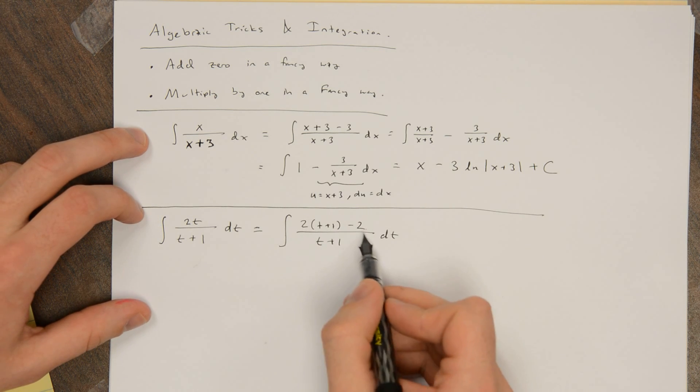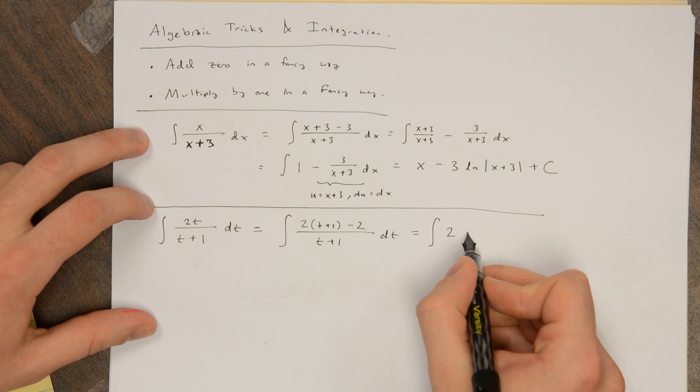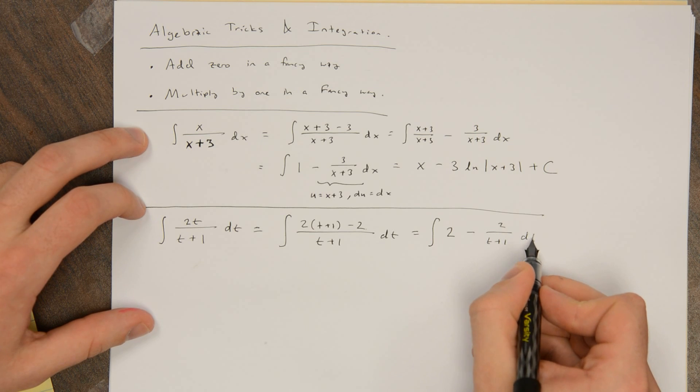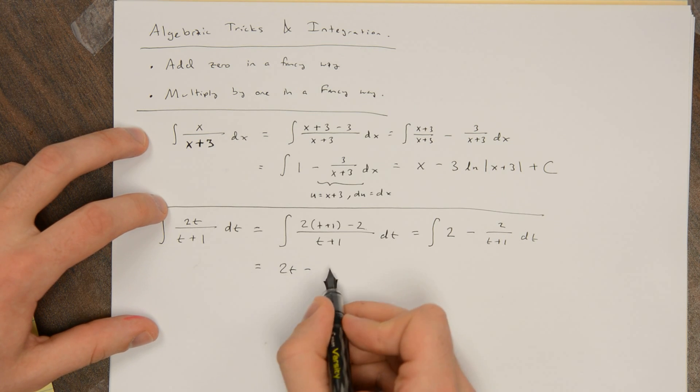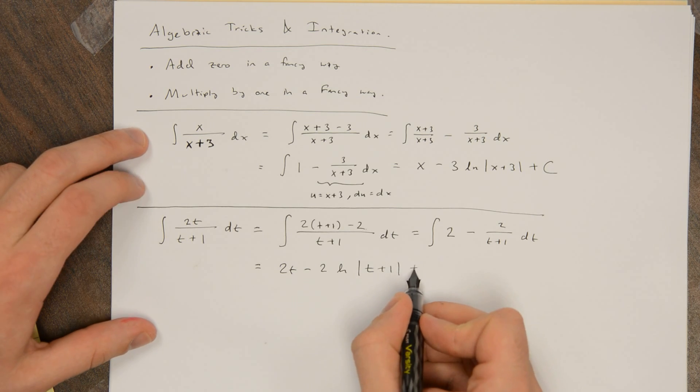So by adding 0 in a fancy way, I get that this is the integral of 2 minus 2 over t plus 1. So this is 2t minus 2 ln of the absolute value of t plus 1 plus c.